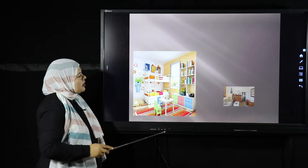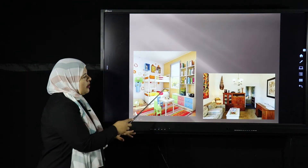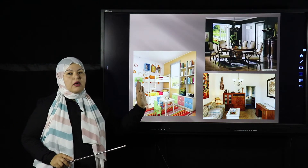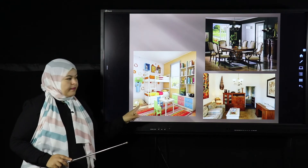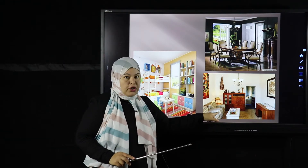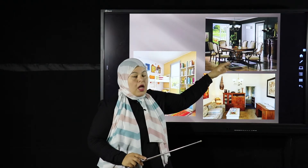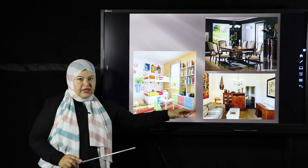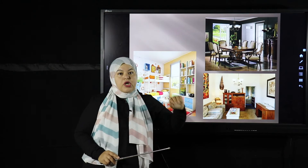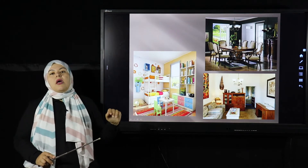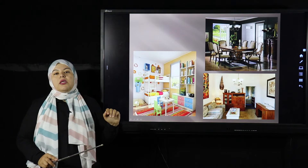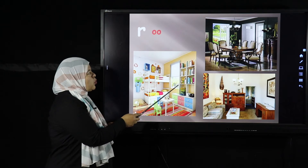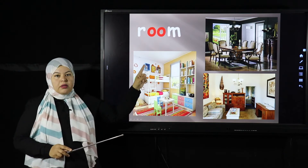What else? We have here three different rooms. This is a bedroom, this is a living room, and this is a dining room. But all of them are rooms. Room: R-OO-M. Very easy one.